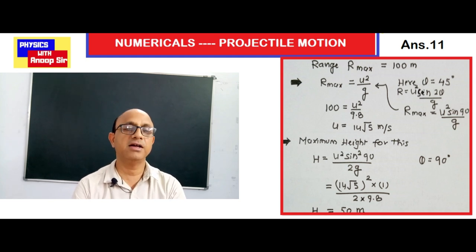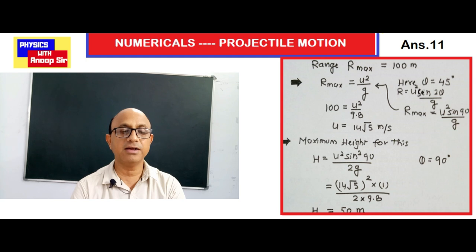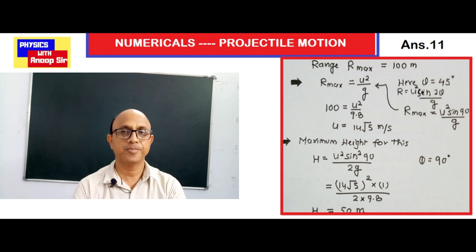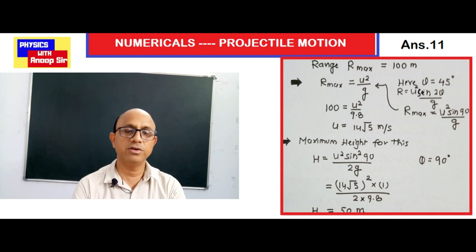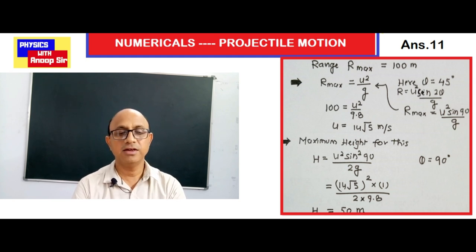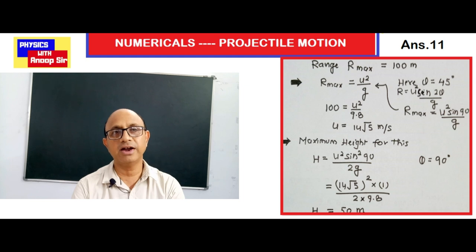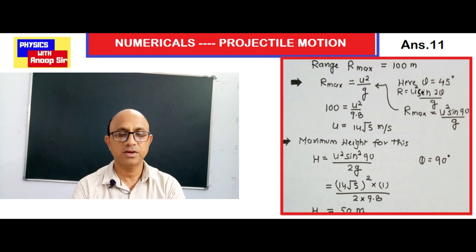So velocity is found with respect to maximum range. Now we need maximum height. To attain maximum height, the body must be thrown straight up at 90 degrees. Using h = u² sin²90° / 2g = (14√5)² × 1 / (2 × 9.8) = 980/19.6 = 50 meters. Maximum height is 50 meters.